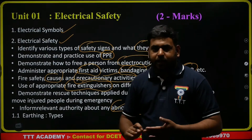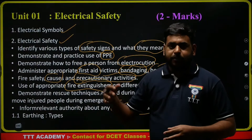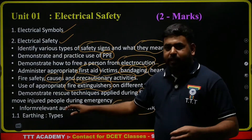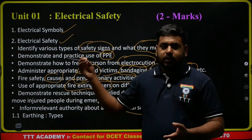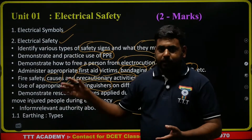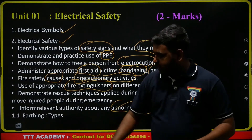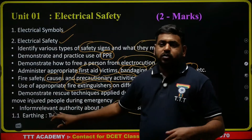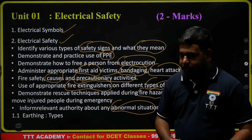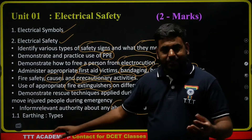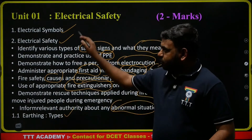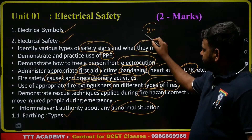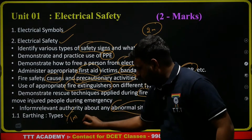Inform the relevant authority about any abnormal situation. For example, if you have an accident, who will be informed? If you have an electric pole issue, you can see it immediately — that's why you have earthing. There are different types of earthings: neutral earthing, equipment earthing, system earthing. It covers two marks, and the importance of earthing is 100% one question.